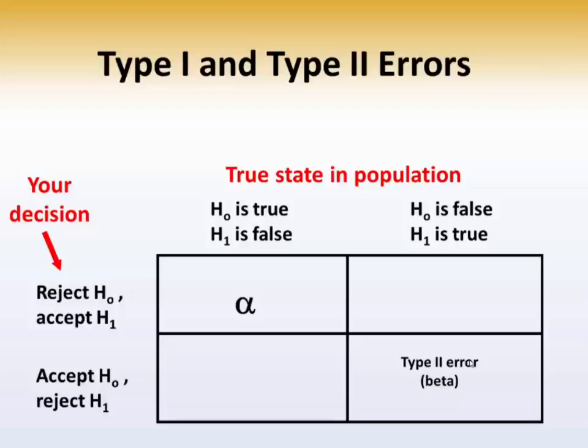Now what is the probability of making a type 2 error? We call that beta, and the probability of making a type 2 error is much more complex to figure out.